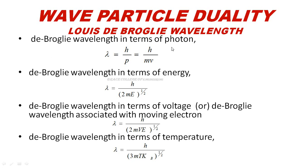For a photon, the wavelength formula is Lambda equals H by P, which equals H by MV. In terms of energy, Lambda equals H by root 2ME. In terms of voltage, Lambda equals H by root 2MeV. It can also be expressed in terms of temperature.